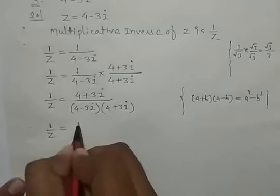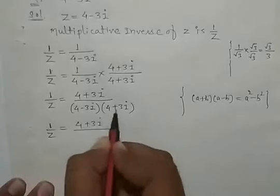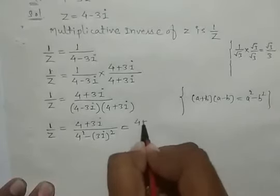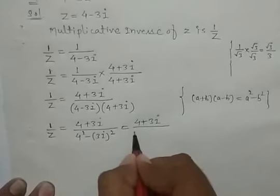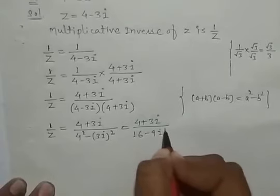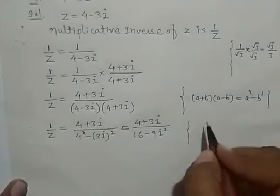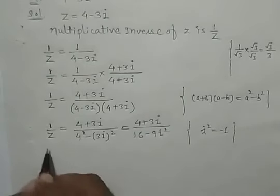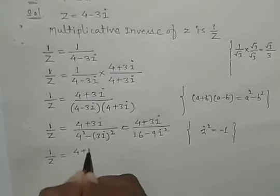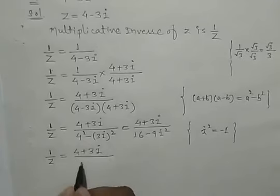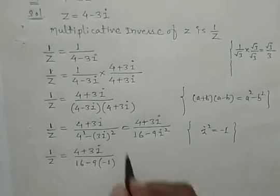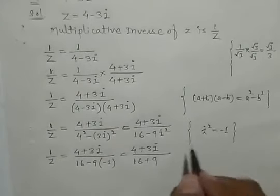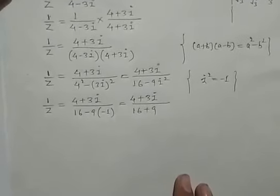So 1 by z becomes 4 plus 3 iota upon 4 square minus (3 iota) square, which gives 4 plus 3 iota upon 16 minus 9 iota square. As learned in the previous video, iota square is equal to minus 1. So it becomes 4 plus 3 iota upon 16 minus 9 into minus 1.